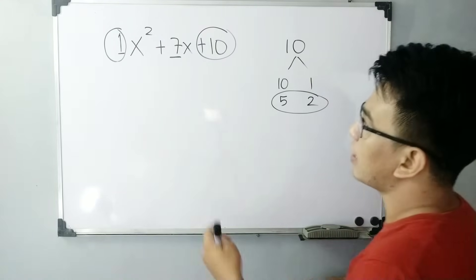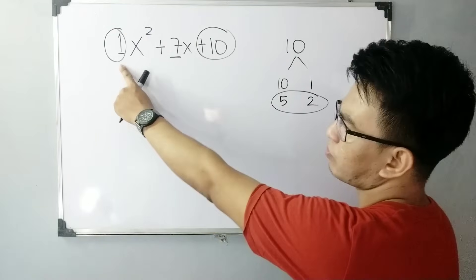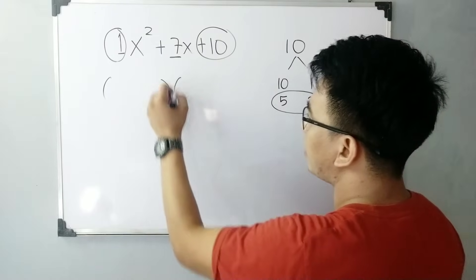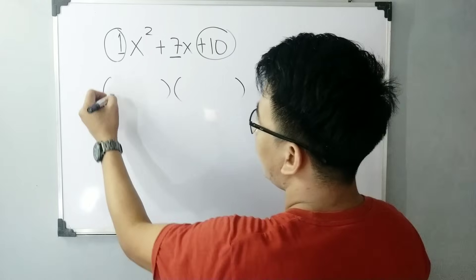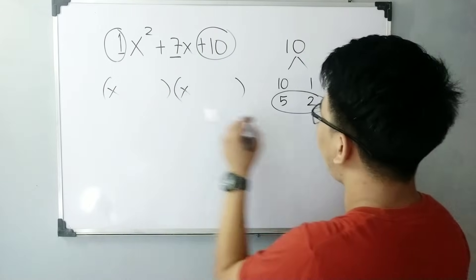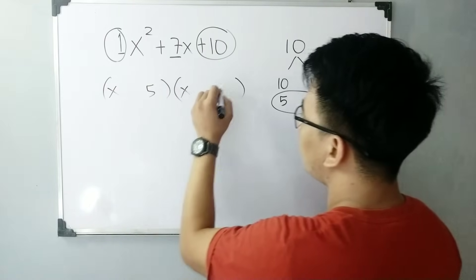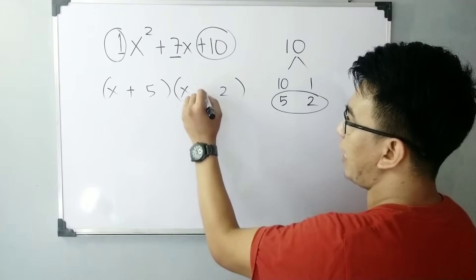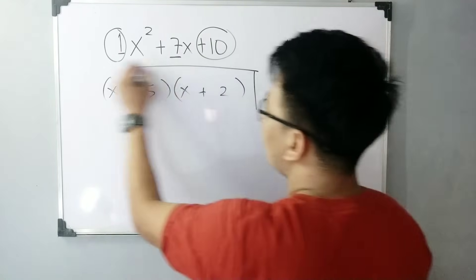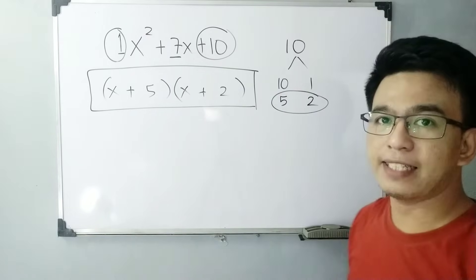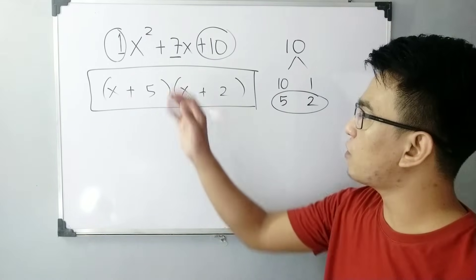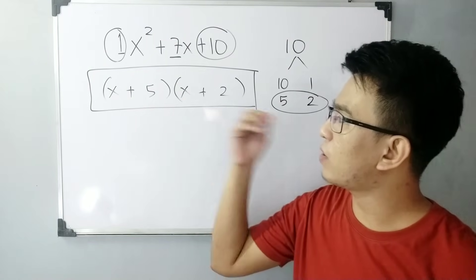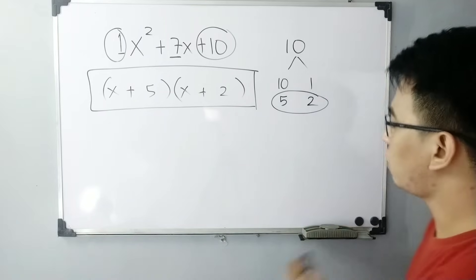So since yung ating leading coefficient ay 1, automatically yung mismong pattern natin is simply x and x, and then 5 and 2. Since pares na lang positive, this will be x plus 5 and then x plus 2. Ito yung mismong factors natin for the first example. Again, the factors of x squared plus 7x plus 10 is equal to x plus 5 times x plus 2.